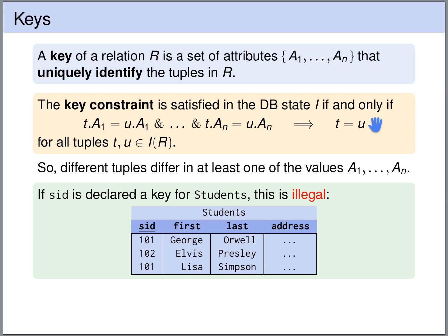Put differently, if you take two different tuples, they must disagree in at least one of the attribute values. They can agree partially on these attribute values, but they must disagree in at least one of them. So if I tell you the attribute values for a1 up to an, then you can find a unique row with these values.